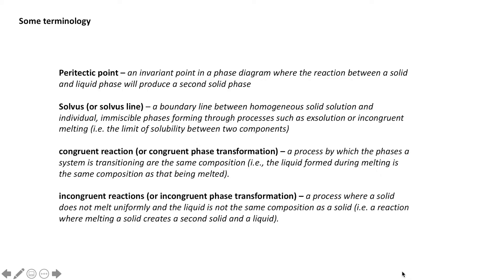Some terminology to start with. A peritectic point is an invariant point in a phase diagram, meaning it occurs at a fixed temperature, pressure, and composition. A peritectic point involves a reaction between a solid and a liquid phase that produces a second solid phase. The solvus, or solvus line, is a boundary line between homogeneous solid solution and individual immiscible phases — essentially representing a solubility limit between two different phases.